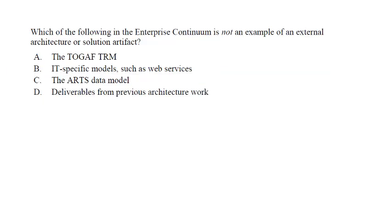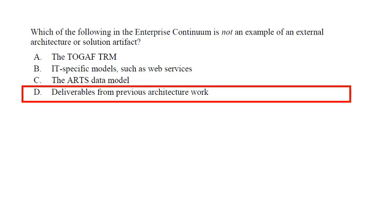Question 3: Which of the following in the enterprise continuum is not an example of an external architecture or solution artifact? Options: A) TOGAF TRM, B) IT-specific model, C) arts data model, D) deliverables from previous architecture work. This question is related to the previous one. The answer is option D — deliverables from previous architecture work, as we established that it is an example of internal architecture.